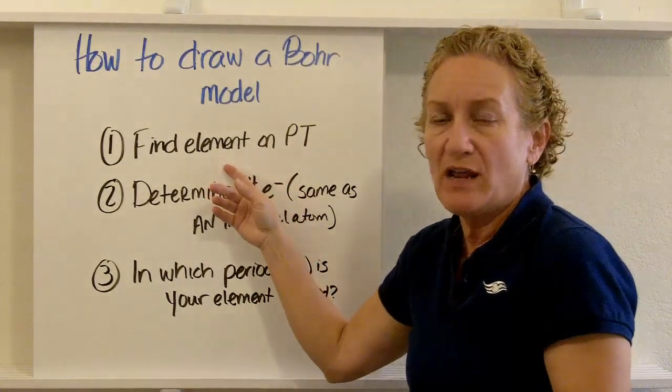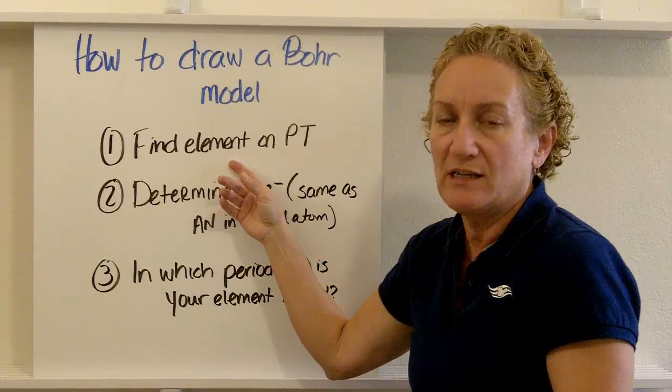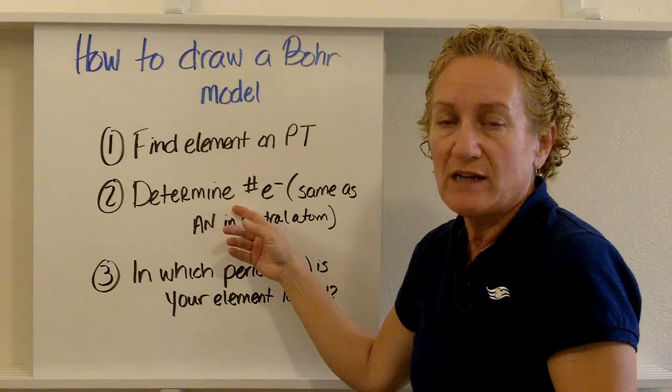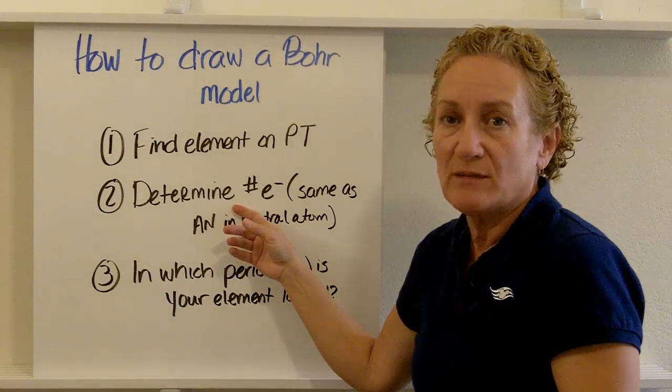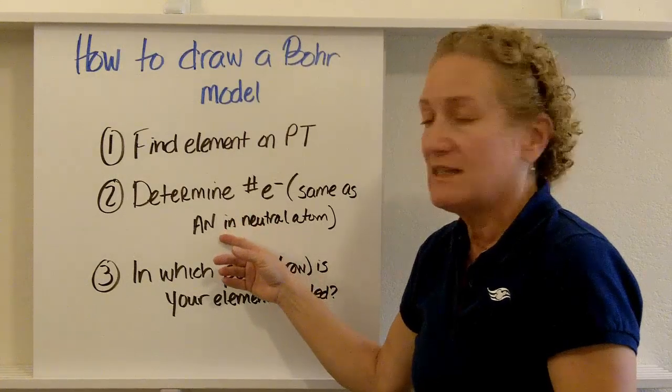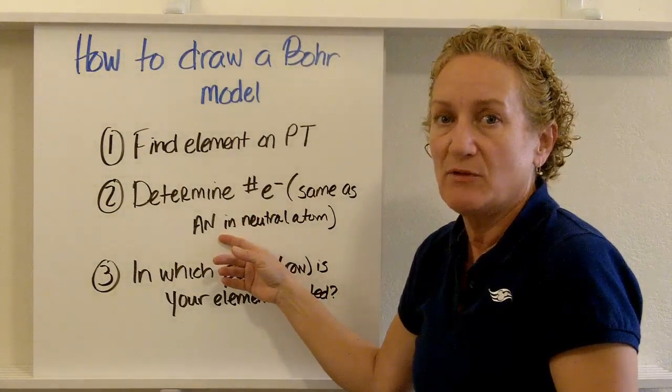First of all, you have to use a periodic table. You have to find your element on the periodic table for a number of reasons. First, you're going to be able to use a periodic table to figure out how many electrons something has. And if it's an electrically neutral atom, it's going to be exactly the same as the atomic number. So that's the number of protons.